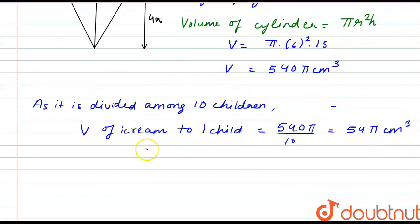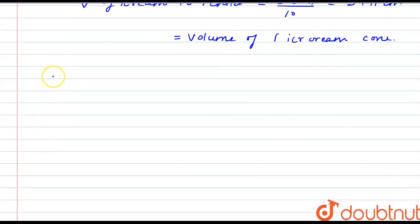So now we have to calculate the volume of ice cream cone. So this is equal to the volume of one ice cream cone. The volume of ice cream cone is equal to the volume of cone plus the volume of the hemisphere.